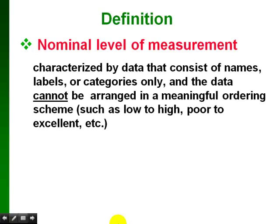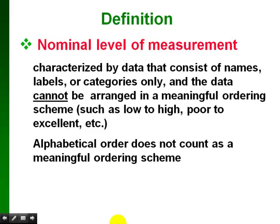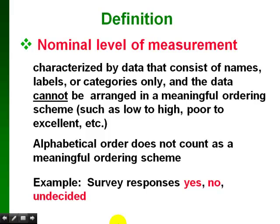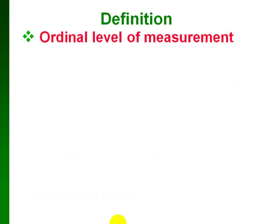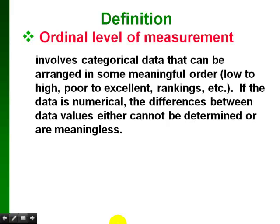The nominal level of measurement — nominal means name. This type of data consists of names, labels, or categories that can't be arranged in a meaningful ordering scheme such as low to high or poor to excellent. We can put nominal data in alphabetical order, but that doesn't count as a meaningful ordering scheme. For example, survey responses such as yes, no, or undecided are nominal data — we really can't put those into a meaningful order.